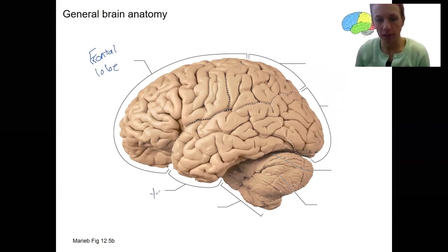Down here, we've got temporal. Again, this is the lobe. We've got occipital. We've got parietal, like your parents watching over you. This is the cerebellum versus the rest of this is the cerebrum. We'll come back to that.